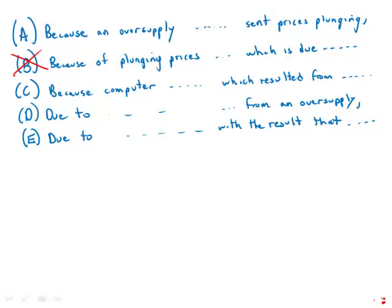Choice C: 'because computer chip prices have been sent plunging which resulted from an oversupply' — that sounds like they're trying to win a contest for being as long and wordy as possible, so that one is definitely out. Choice D: 'due to plunging computer chip prices from an oversupply' — okay, at least that's short. We'll come back to that.